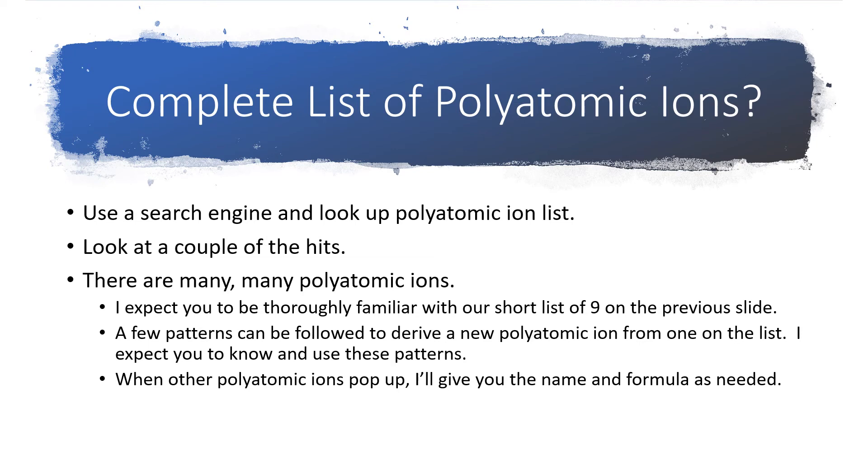And then, in addition to that, there are some patterns that will generate families of ions. So, if you know the -ate ion, like if you know nitrate is NO3 minus one, you can apply one of these patterns to figure out that nitrite is NO2 with a minus one charge. For any other polyatomic ions that pop up, I'll give you both the name and the formula as they are needed.